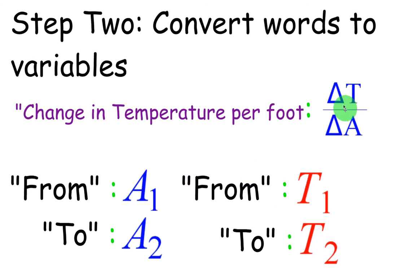So here are our variables, change in T over change in A. So yeah, this is the dependent variable, and this is the independent. That's the way it should always be.